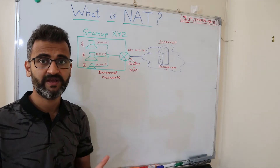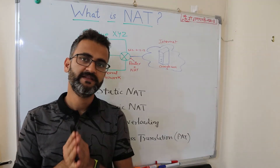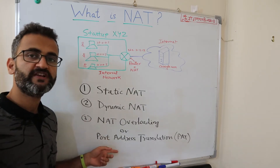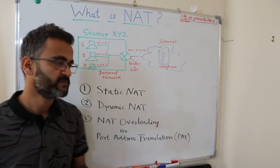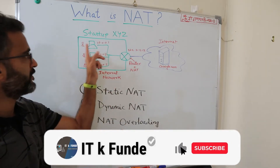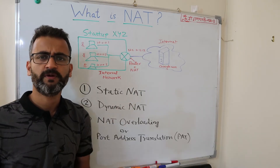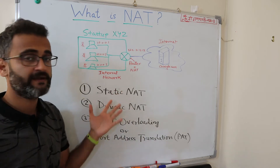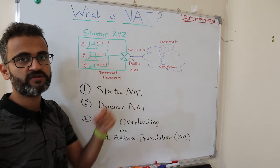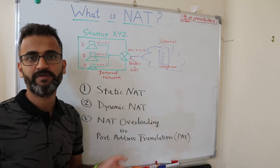There are basically three types of NATs: Static NAT, Dynamic NAT, and NAT Overloading, which is also called Port Address Translation or PAT. Static NAT is very basic but rarely used — it maps one private IP address with one global address, which means you can't preserve anything using NAT. This is a one-to-one mapping between one private and one public address. It could be used if your company has only one person accessing the internet, but it's generally useless.